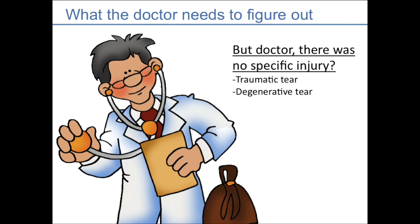Many patients say there was no specific injury, so they wonder how they got a tear. There are two kinds of tears: traumatic and degenerative. A traumatic tear happens to a young person — for example, skiing and twisting the knee. As people get older, they can get degenerative tears, just from wearing and tearing, like the tires on a car wearing down. The same thing can happen to the meniscus over the years, so in that scenario you don't always see a trauma or injury.